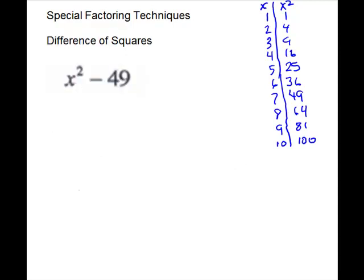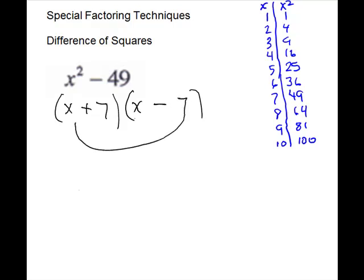Next, we'll look at some more problems with perfect squares. These problems are called difference of squares. They have two terms — they are actually missing a middle term. They go from x² to a constant, so they're missing the x term. They have to be two terms, they have to be minus, and they have to be perfect squares. So this one looks like a good candidate. We do use two sets of parentheses. They will be different signs to multiply to get a negative. Then guess your square roots: for 49, 7 and 7. Minus 7x plus 7x — these are going to wipe out. That is what you want to happen because you don't have a middle term.